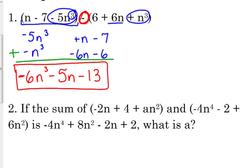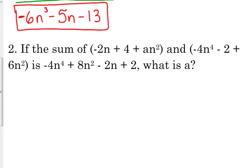Let's look at number 2. This one is not really given to us in terms of just a straight-up problem. It's kind of given to us in words. So it says, if the sum of negative 2n plus 4 plus an squared, or where this other variable can come, let's keep reading, and negative 4n to the 4th minus 2 plus 6n squared is negative 4n to the 4th plus 8n squared minus 2n plus 2, what is a?